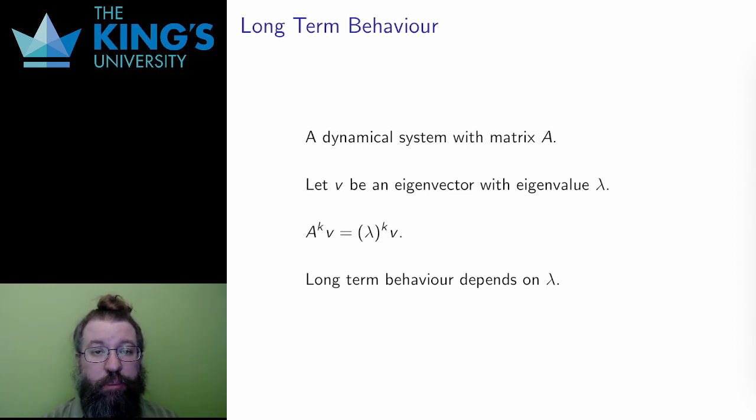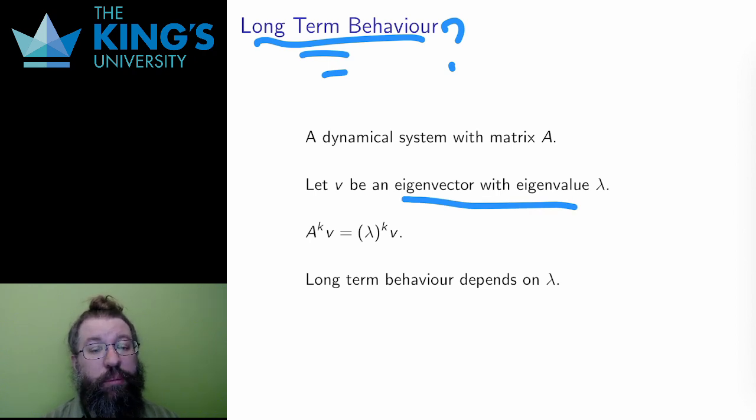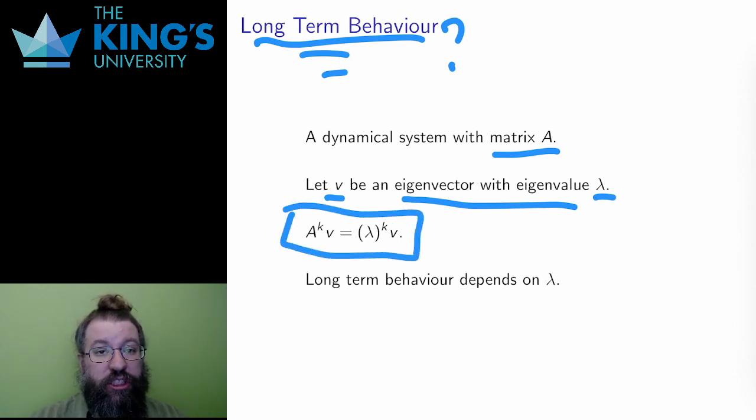When I build a dynamical system to model some situation in the world, it's natural to ask about the long-term behavior of the system. From a certain starting vector, where will the dynamical system go? This question is mostly answered by eigenvalues and eigenvectors. So, consider a dynamical system described by matrix A. If V is an eigenvector with eigenvalue lambda, then by definition AV is lambda times V. The matrix action is a change of states over a time step. But if the state is an eigenvector, then the only effect of the time step is to multiply all the quantities in the state vector by the same constant.